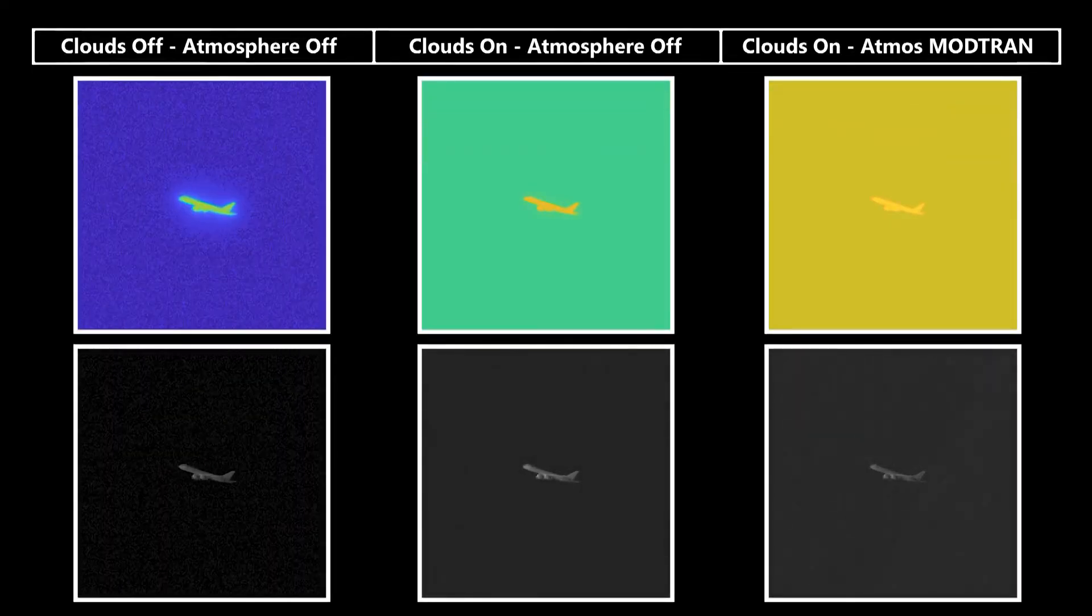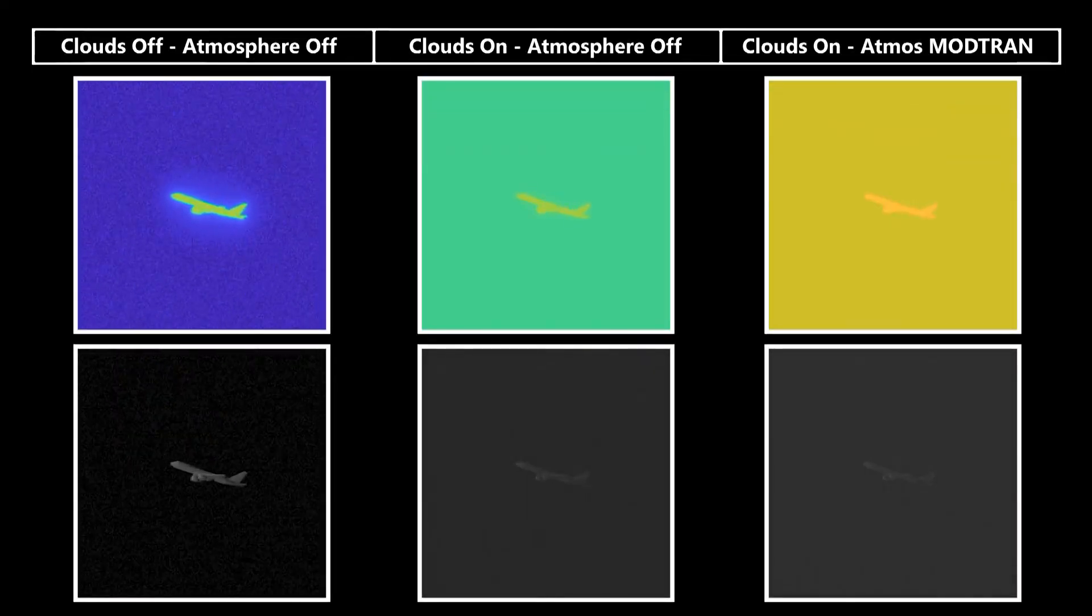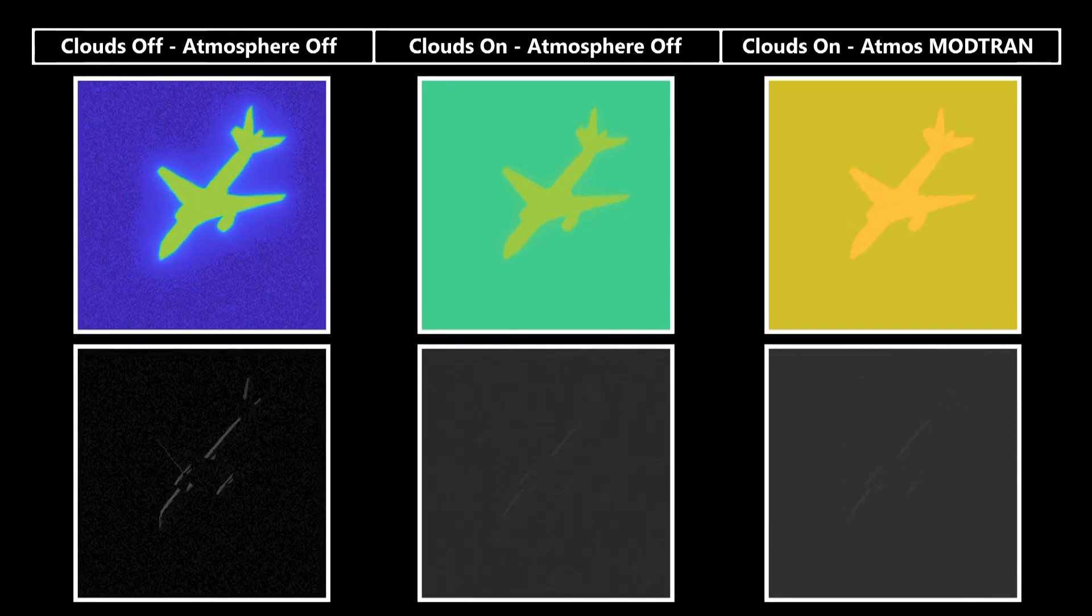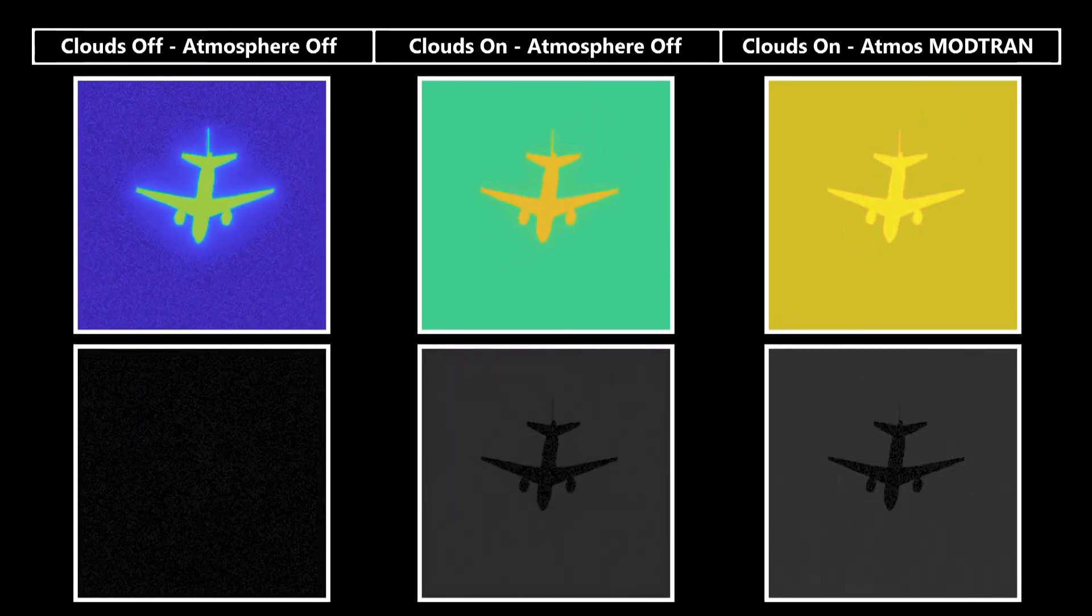Without any atmospheric or cloud conditions, we see the aircraft clearly. But once we incorporate clouds, we can see the aircraft dim, so to speak. Finally, we can look at the same scene with the clouds and MODTRAN atmosphere.